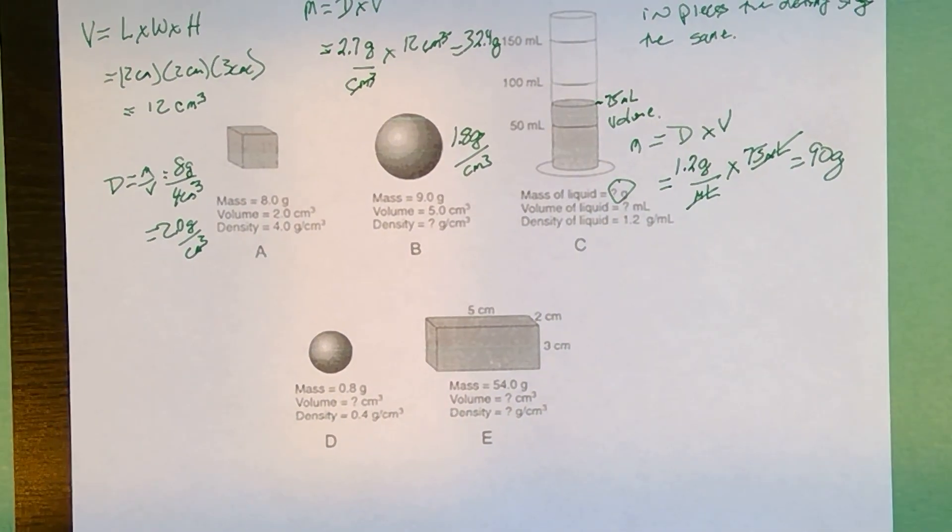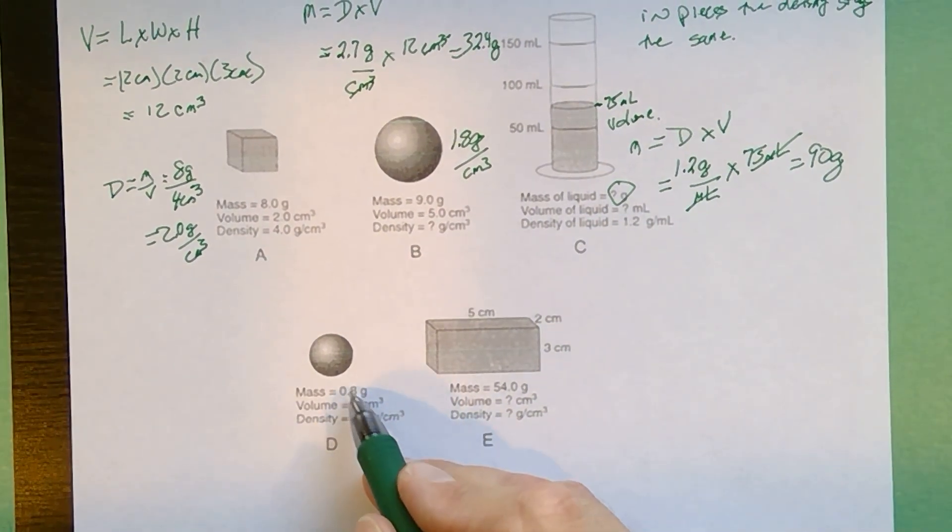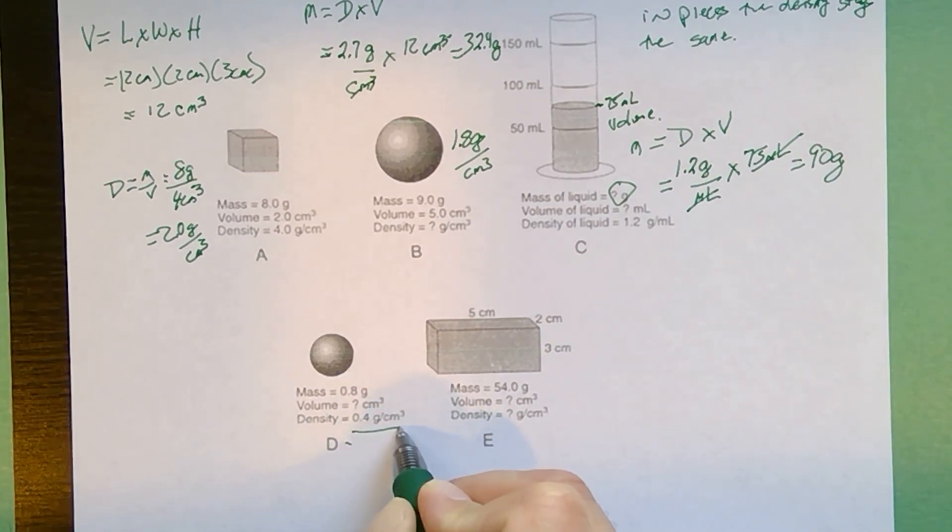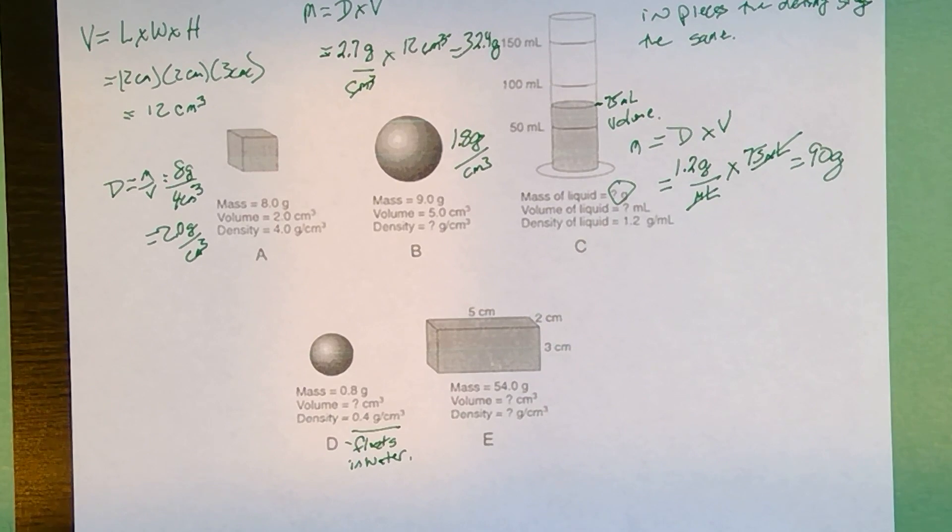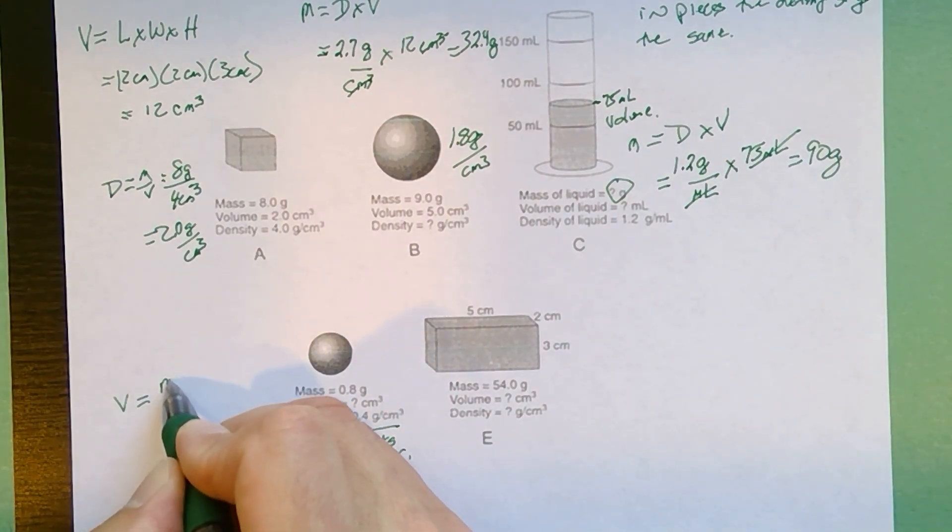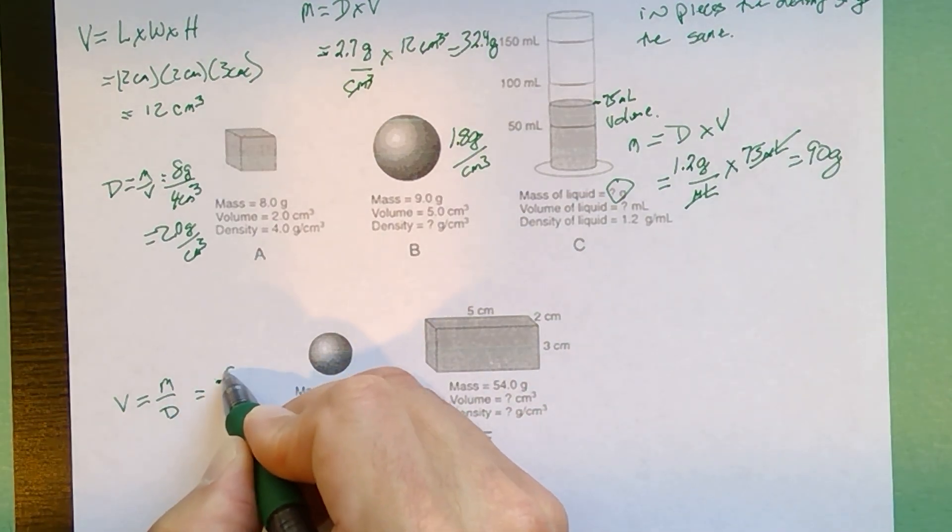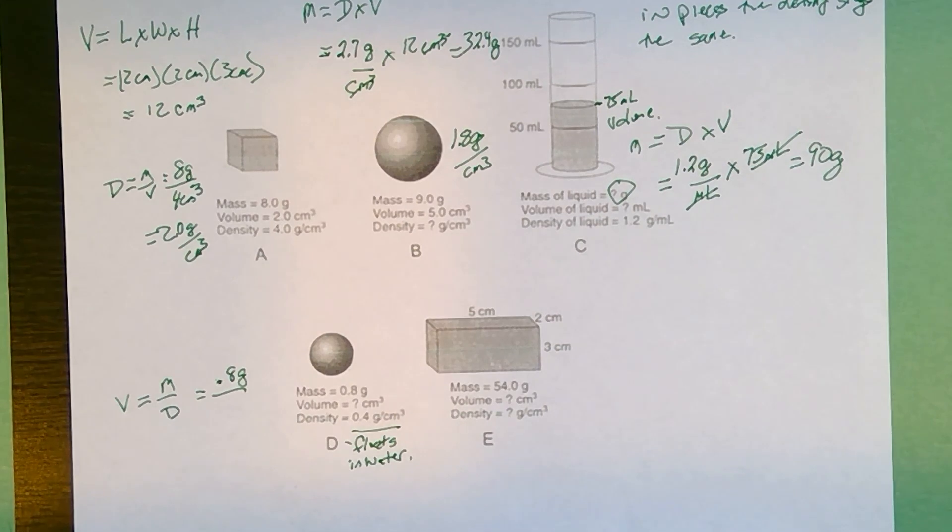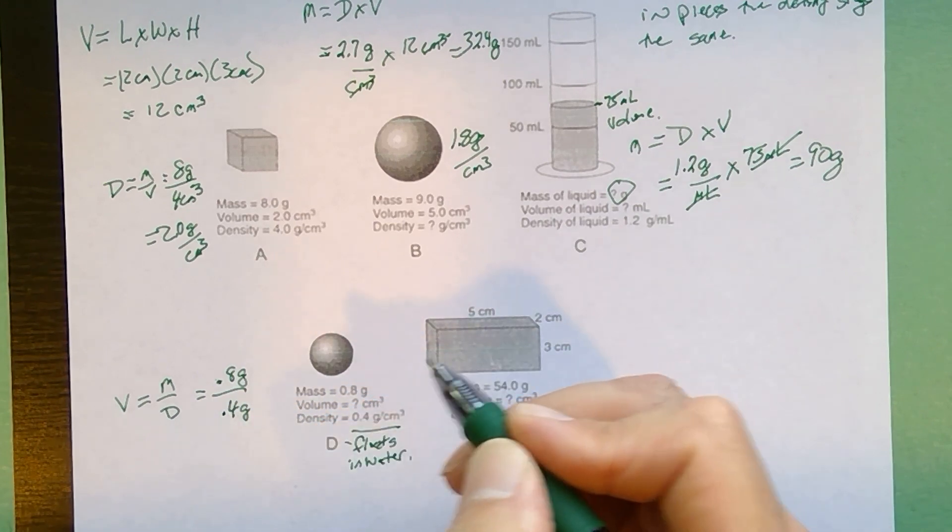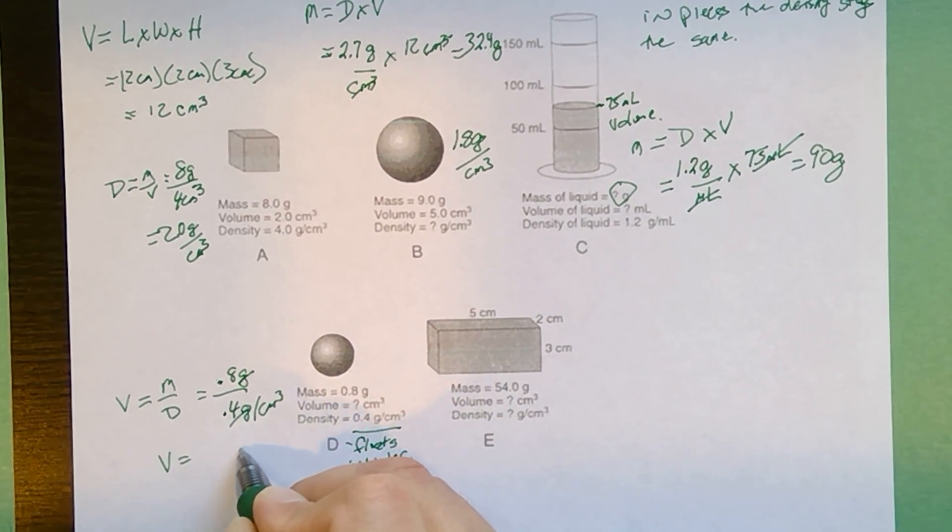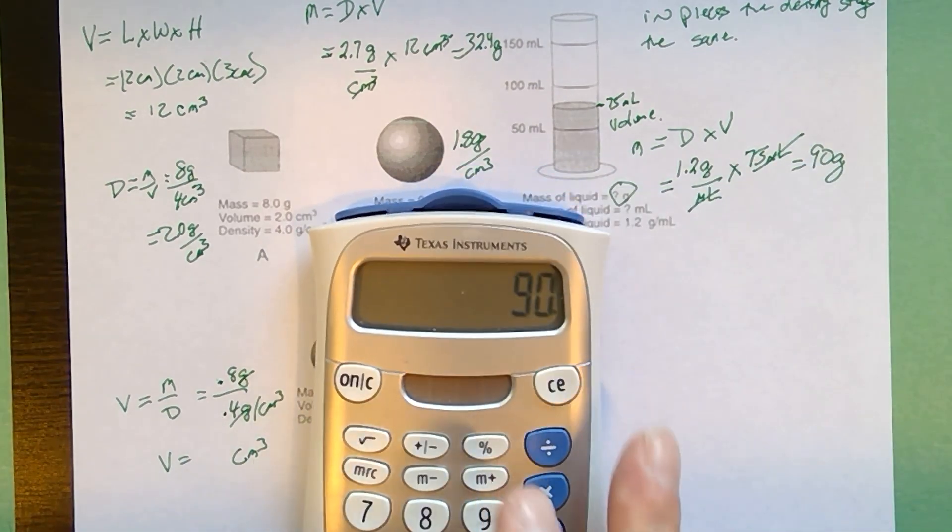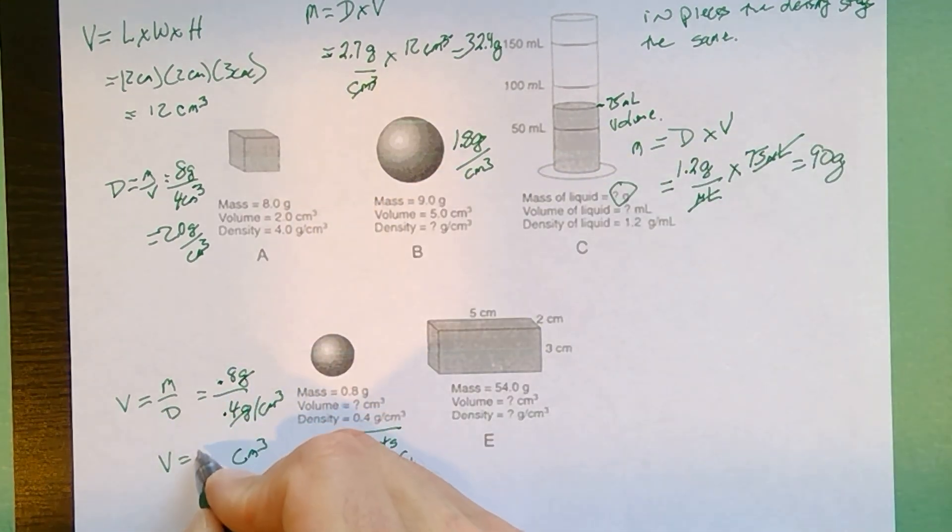Two more objects below this. We have object D and object E. They're giving me the mass and the density. Now you'll notice that D has a density of 0.4. That's going to tell you this floats in water. Because liquid water has a density of 1. And they expect you to know that liquid water has a density of 1. To solve for volume, volume is equal to mass over density. My mass is only 0.8 grams. It's a low mass. But when I'm dividing by 0.4 grams per cubic centimeter, my grams cancels my grams. I wind up with volume in cubic centimeters, which is right. But 0.8 divided by 0.4 is going to give you 2.